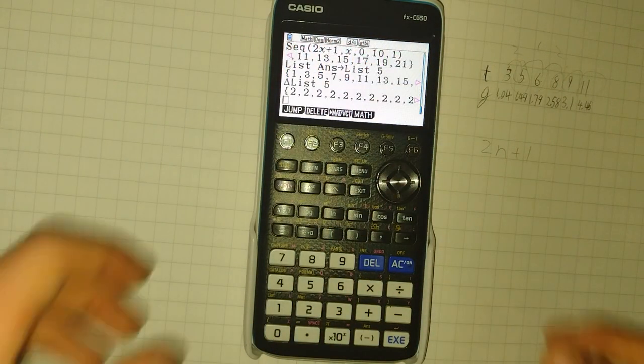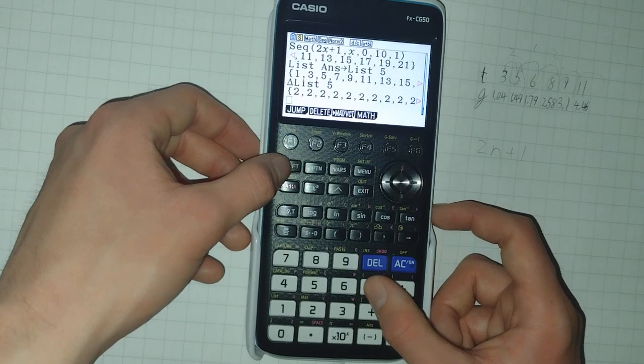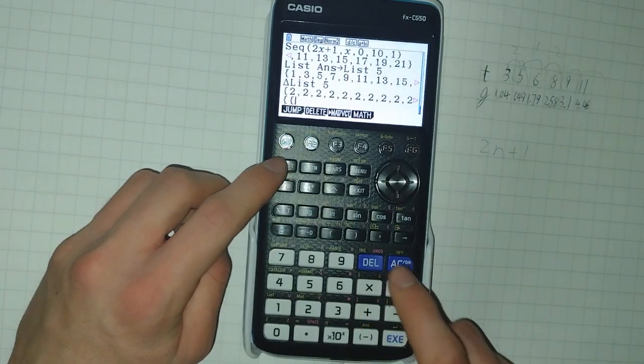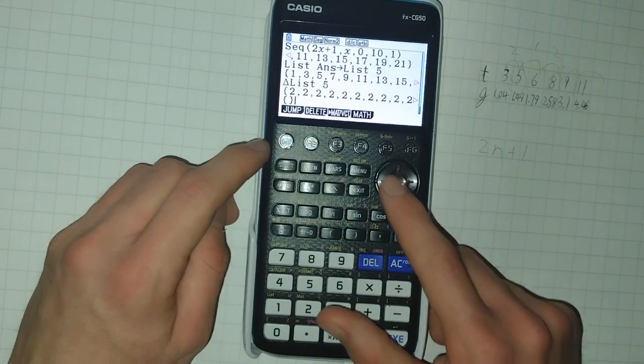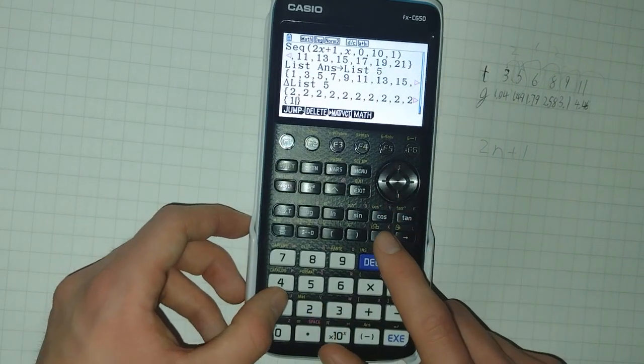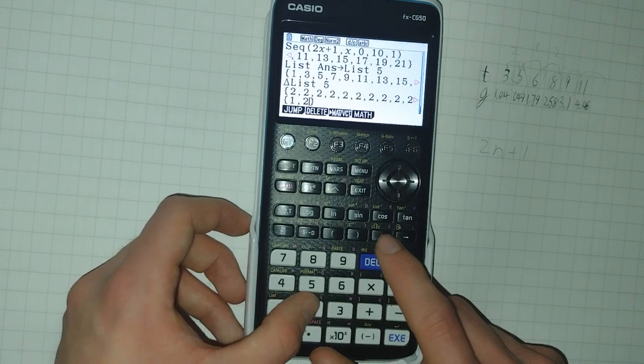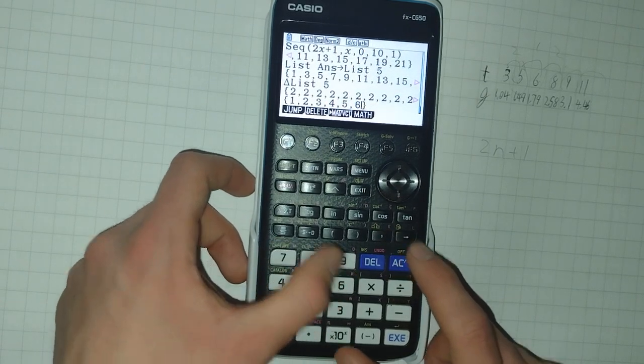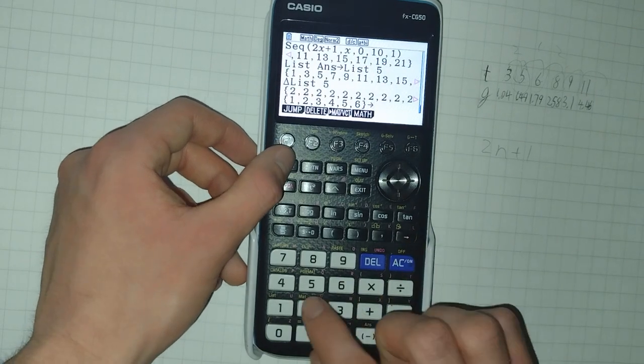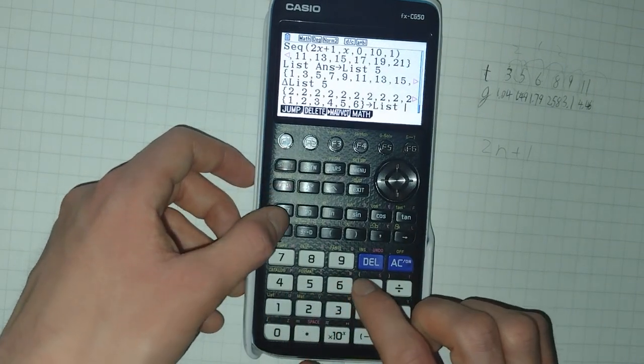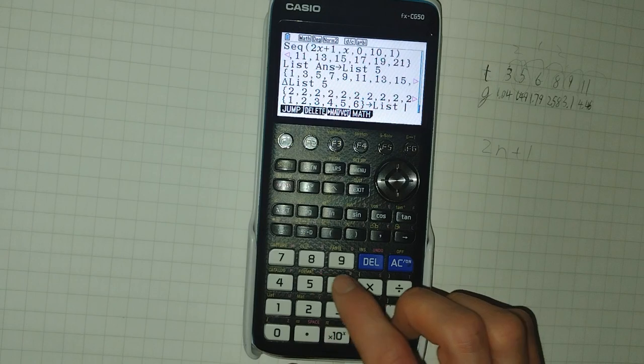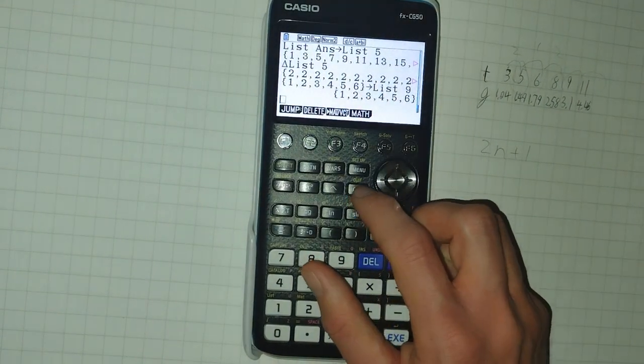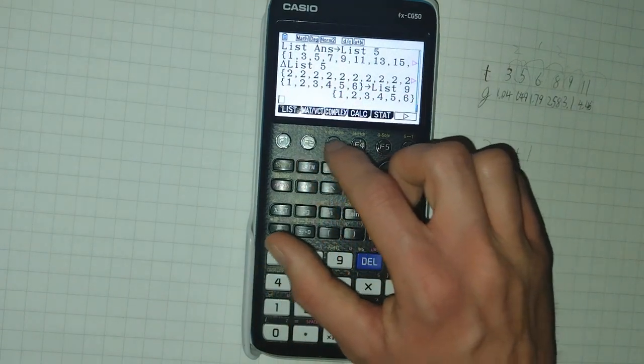Returning to run matrix, there are a few other ways we can create lists. Firstly, you can just define them manually using the curly brackets, which is shift multiply and shift divide. You can then use comma as the deliminator to get a list. And I'm going to assign this directly into list nine.